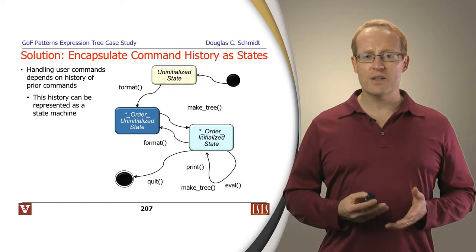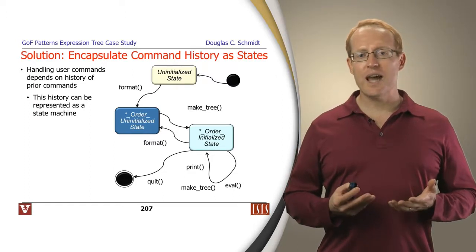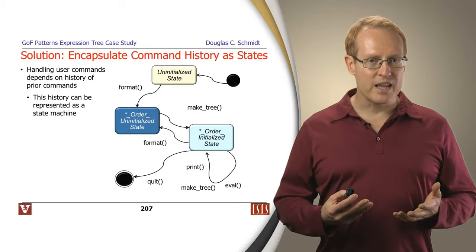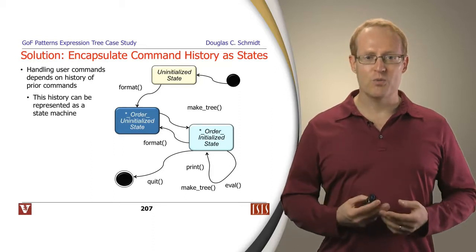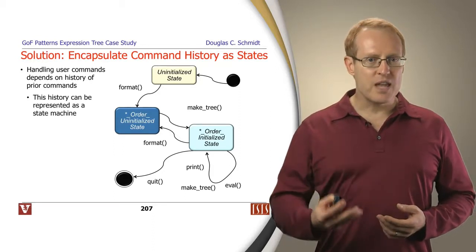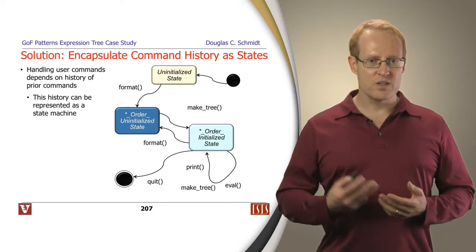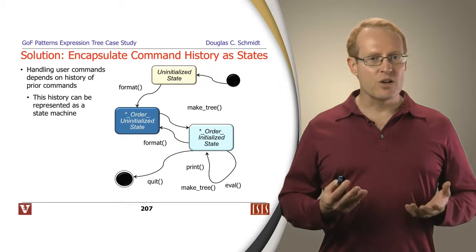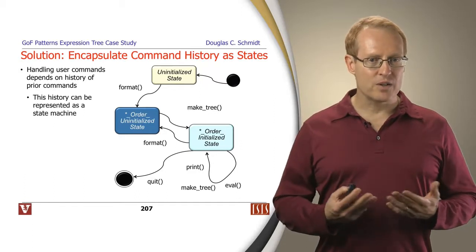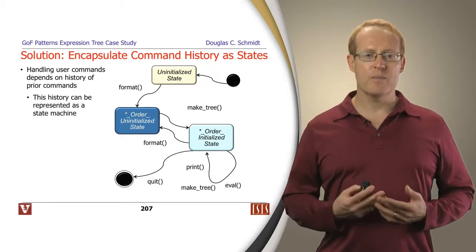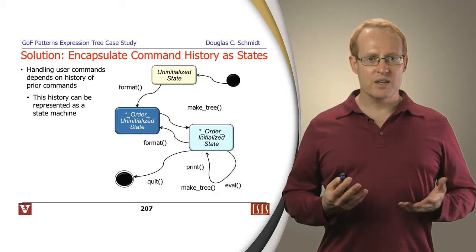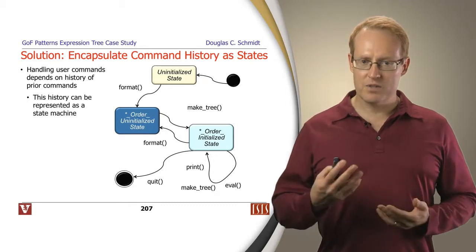And once you've gotten an expression to process, then eval or print can be called in any order. And at any point you can also go back and make another expression. So these are the different ways in which you can interact with the program in correct order. Now it turns out that the solution here is to encapsulate command history, which is very important to figure out the right order in which to run things, as states in a state machine.